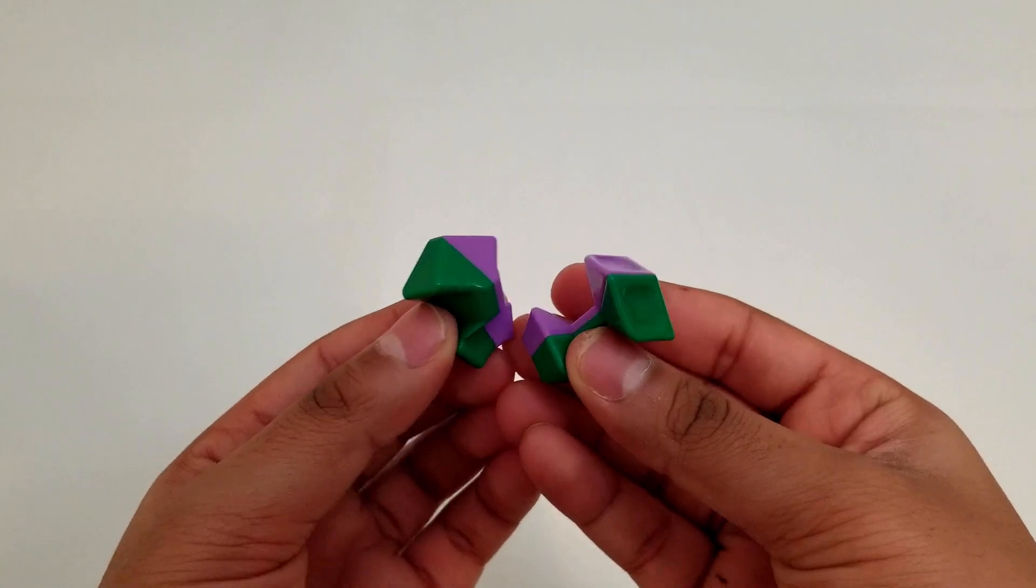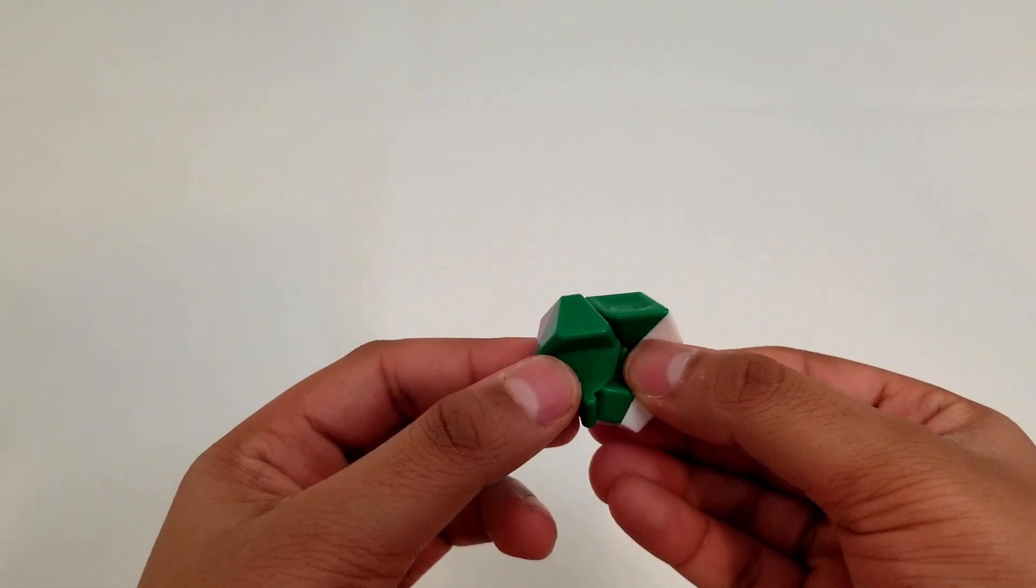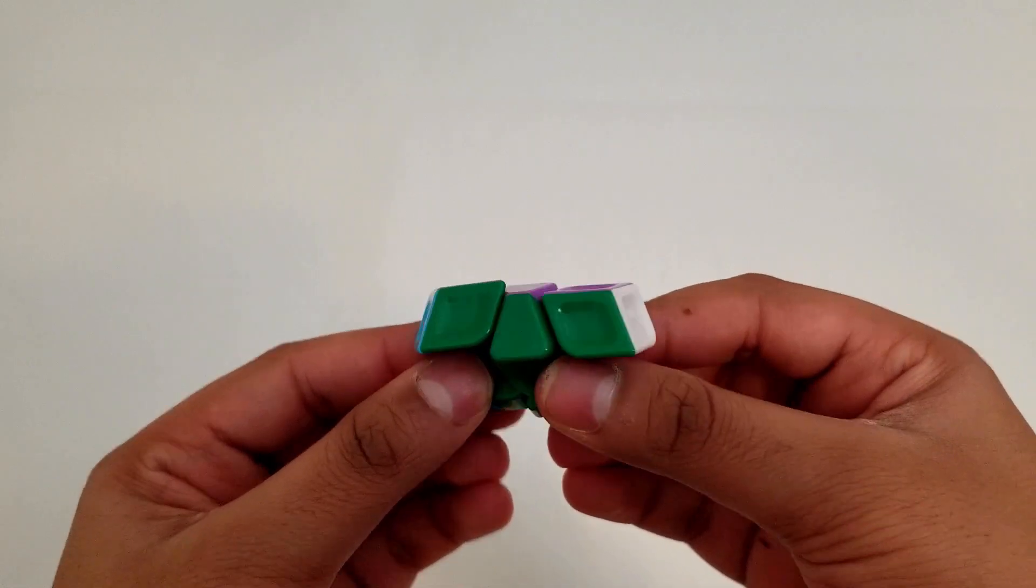Now, if you take both the corner piece and edge piece, they slide perfectly together. This also works if you do it with three pieces.